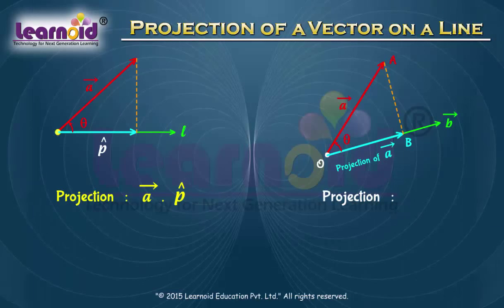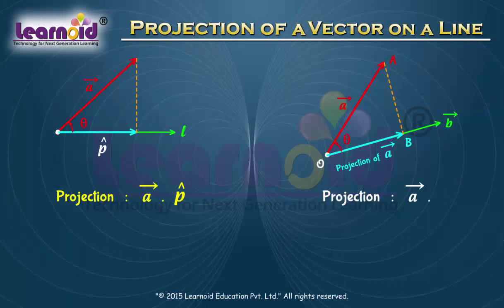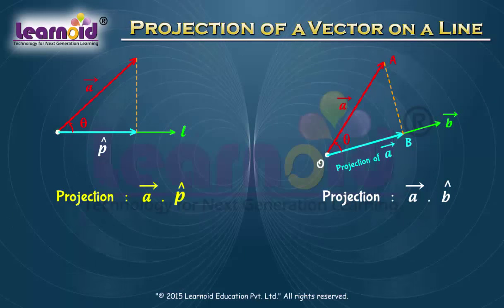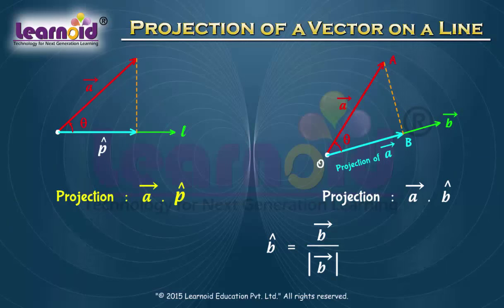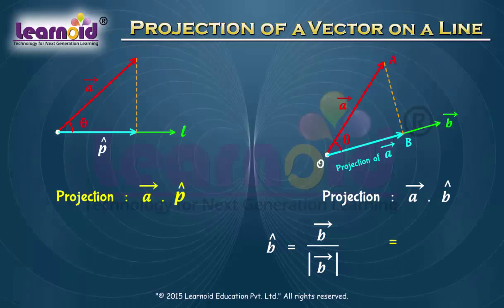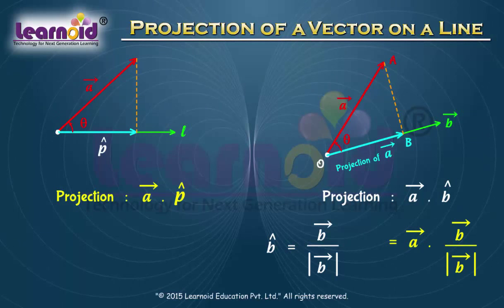The projection of vector A on any other vector B is given by the dot product of vector A and unit vector B-cap. The unit vector in the direction of vector B is B divided by the magnitude of vector B. So the projection is equal to the scalar product A dot B divided by the magnitude of vector B.